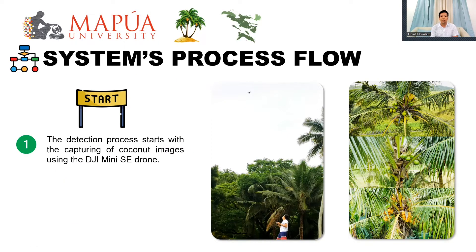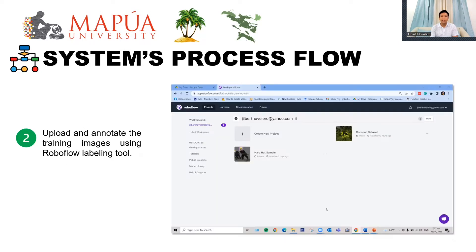The first step in the process is capturing coconut images using the DJI Mini SE. Due to heavy rains encountered during the field work, the 250 images were captured on different dates. Images were downloaded from the drone memory, finalized, and saved to a computer folder. The next step is uploading the training images to RoboFlow, an open-source online labeling tool, where the desired coconut classes and annotations are set as ground truths. Annotation was the most tedious part — approximately four days were spent ensuring images were labeled accordingly.